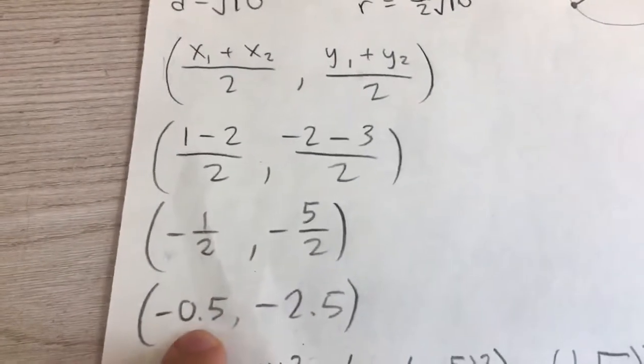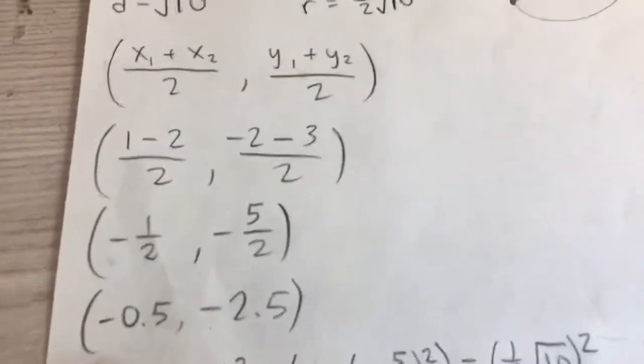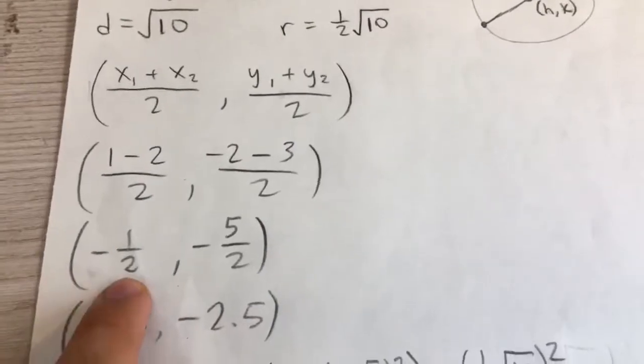You can also represent this as -0.5 and -2.5. So those are our values of h and k.